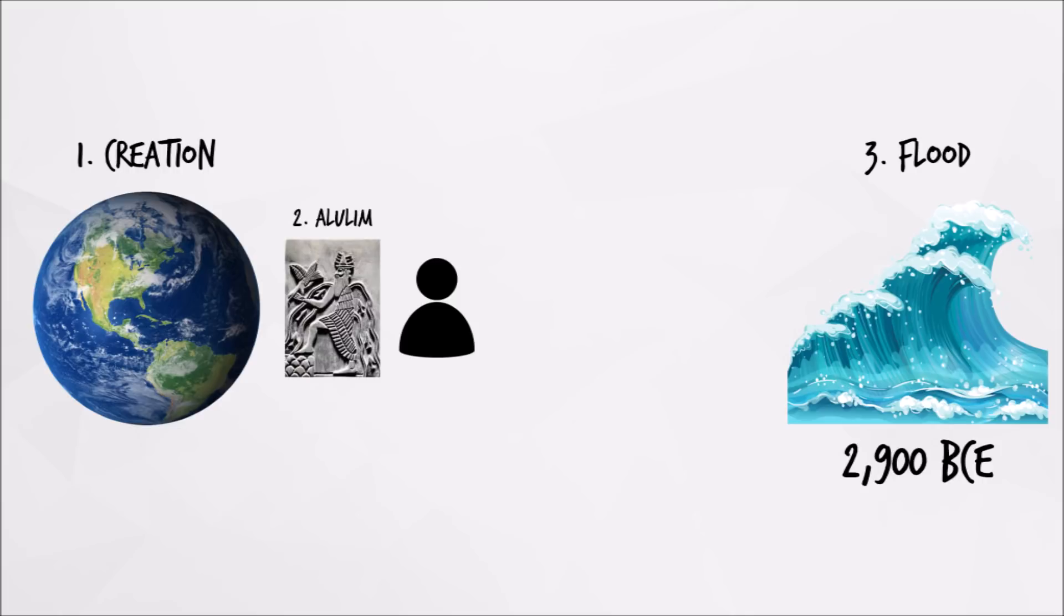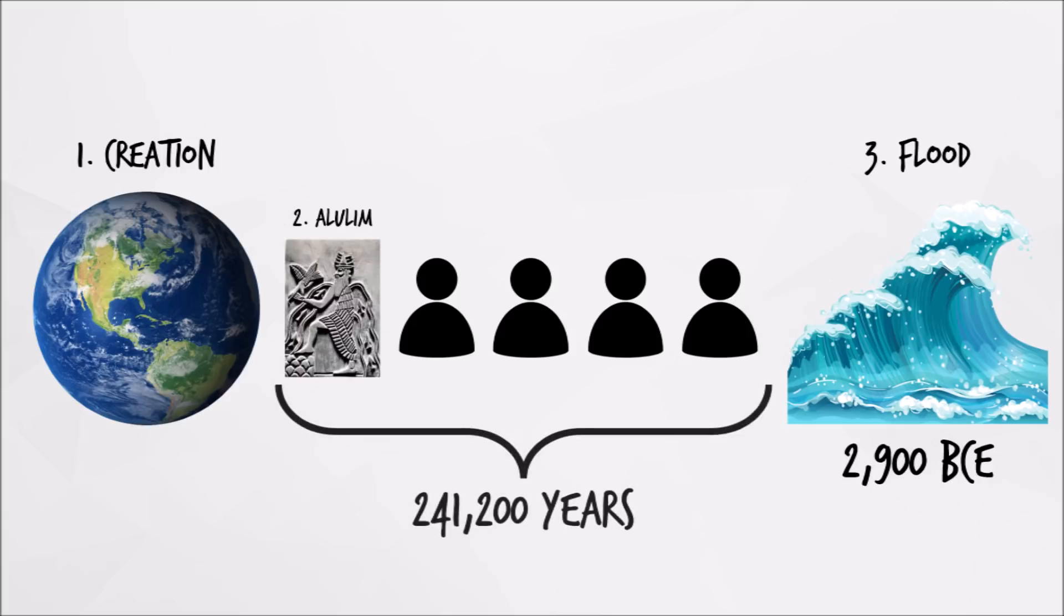By adding the lengths of rule of the ancient Sumerian kings together, getting 241,200 years, and adding that to the date 2,900 BCE, scientists estimate that Sumerians believed the earth started existing in 244,100 BCE.